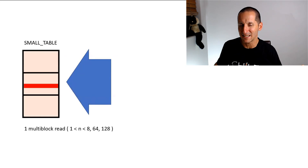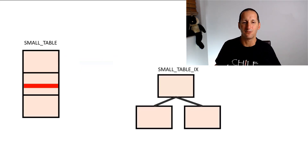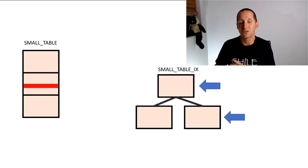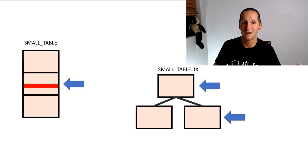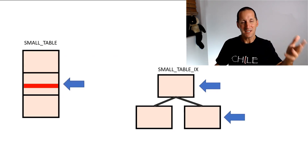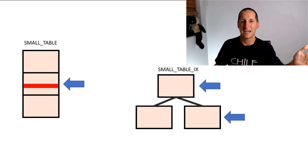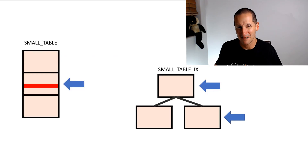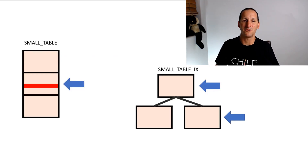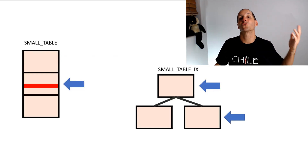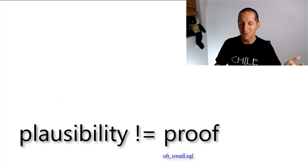One IO is all I need. Compare that to an index. If I put an index on that small table — well, an index is a B-tree. I have to read the root block, then I have to read the branch or the leaf blocks, and only then can I go get the data pointed to by that index. So there's my claim: it seems to make sense. One IO for the full table scan, minimum absolute minimum three IOs for the index read. Surely I shouldn't have an index. The problem is plausibility is not the same as proof.